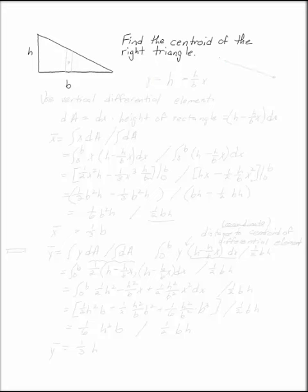Find the centroid of the right triangle of height h and width b. The first thing we want to know is what is the formula for the line that goes from here to there. We can use y equals mx plus b. The general slope of the line is going to be minus h over b, rise over run, and the y-intercept is going to be h.